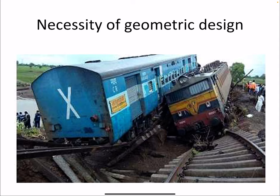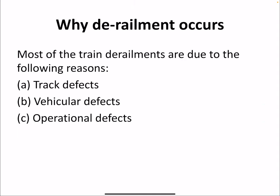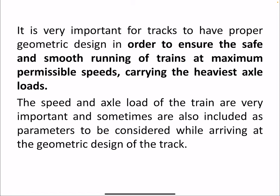If we don't properly design the railway track, we obviously know what will happen: derailment. Most of the train derailments are due to track defects, vehicular defects, and operational defects. It is very important for tracks to have proper geometric design in order to ensure the safe and smooth running of trains at maximum permissible speeds, carrying the heaviest axle loads. Speed and axle load are important parameters considered in geometric design.